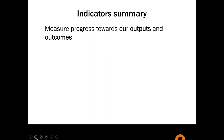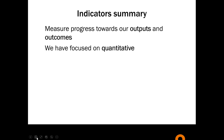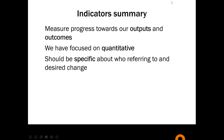In summary: indicators measure progress towards an outcome. You can have indicators for outputs, but in terms of outcomes they measure progress towards an outcome. We've focused mostly on quantitative indicators — there are qualitative ones too. Ideally they should be specific about who we're referring to and the desired change. I've given you some criteria to put your indicators through to make sure they're the right one for the outcome, taking into account cost and time limits.